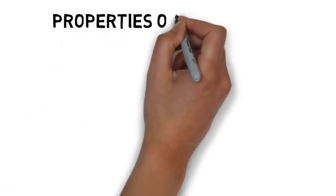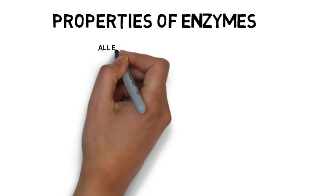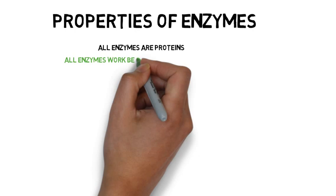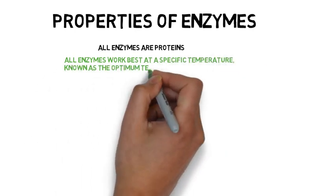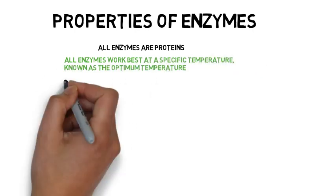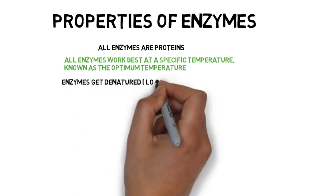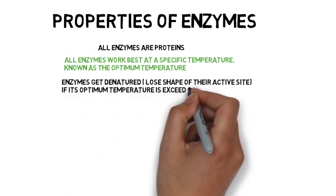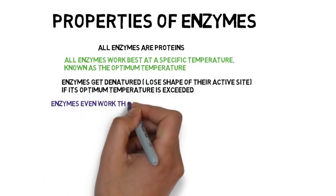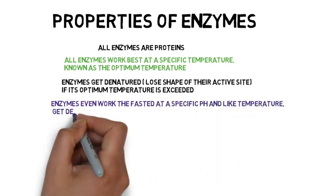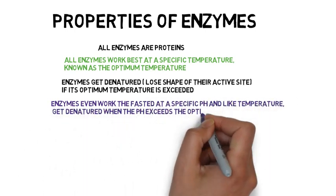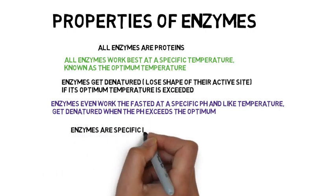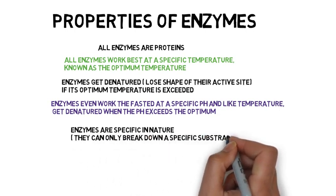The properties of enzymes: all enzymes are proteins. All enzymes work best at a specific temperature, known as the optimum temperature. Enzymes get denatured — lose the shape of their active site — if the optimum temperature is exceeded. Enzymes work the fastest at a specific pH level and, like temperature, get denatured when the pH exceeds the optimum level. Enzymes are specific in nature; they can only break down a specific substrate.